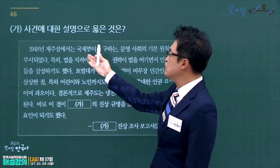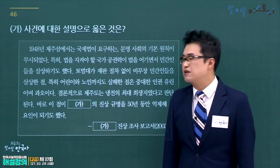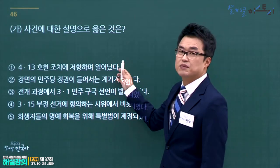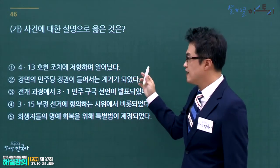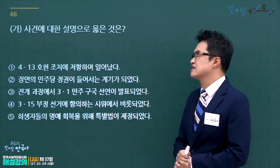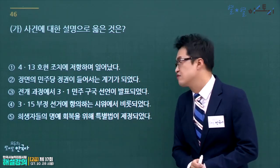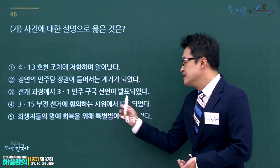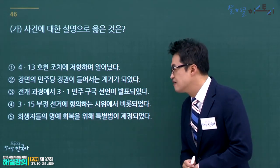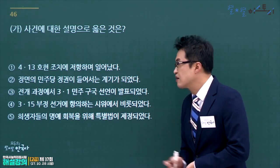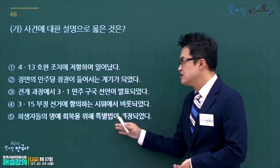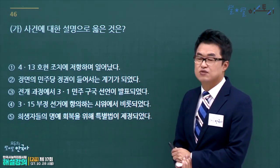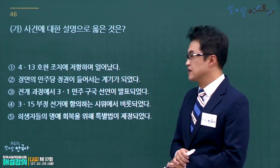1948년 제주에서 일어난 사건은 제주 4·3사건입니다. 4·13호헌조치 저항은 1987년 6월민주항쟁, 장면 민주당 정권 수립 계기는 4·19혁명, 3·1민주구국선언은 유신체제 관련입니다. 3·15 부정선거에 항의하는 시위는 4·19혁명과 연결됩니다. 4·3사건 희생자들의 명예 회복을 위해 특별법이 제정된 것이 정답이므로 5번입니다.